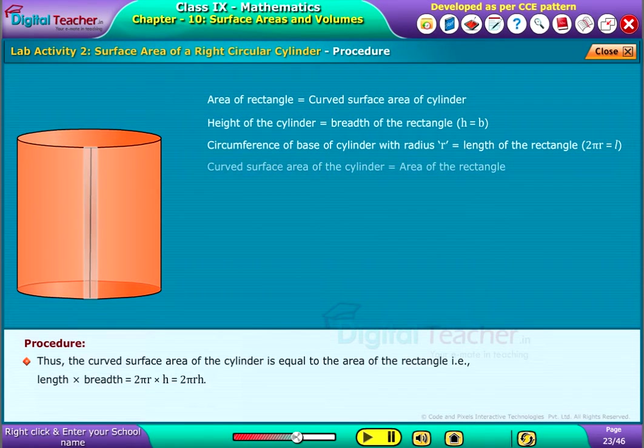Thus, the curved surface area of the cylinder is equal to the area of the rectangle. That is, length into breadth equal to 2πr into h equal to 2πrh.